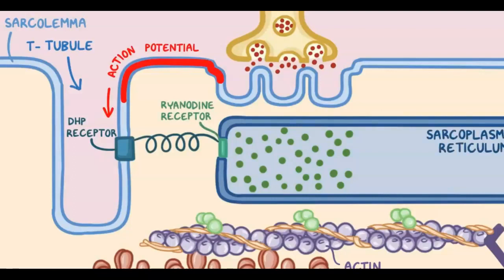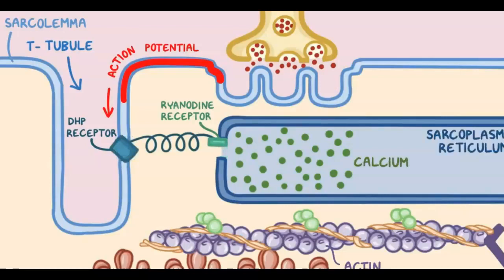Once stimulated, the dihydropyridine receptor changes shape, and this causes the ryanodine receptor, which is a calcium channel, to open. This allows the large quantities of calcium stored within the sarcoplasmic reticulum to flow out into the sarcoplasm.